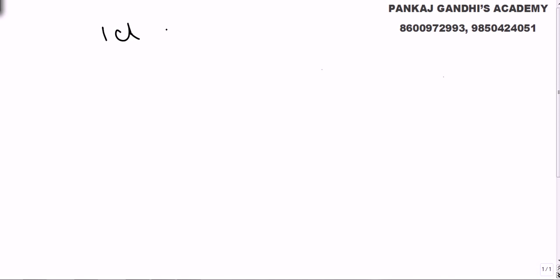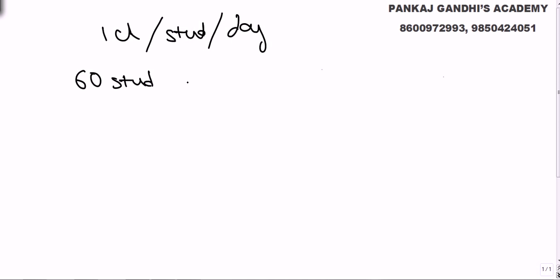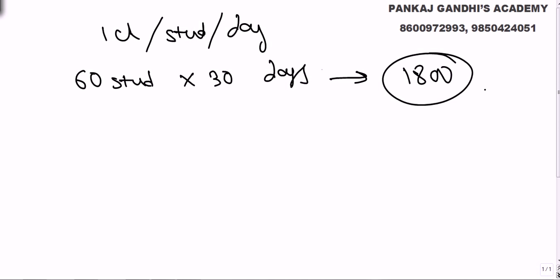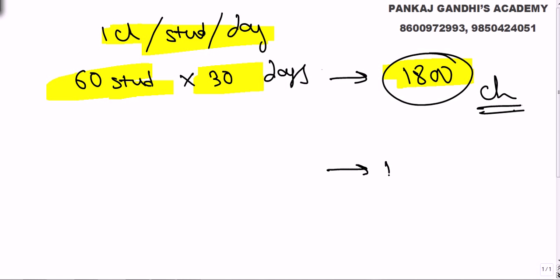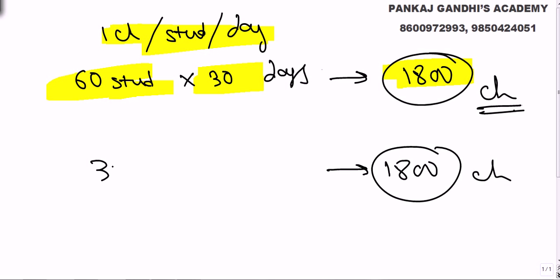Let's say in our class we decide to give one chocolate per student per day and there are 60 students. The class lasts for 30 days, so for 60 students, 60 chocolates per day into 30 days, we will need 1800 chocolates. If we have 30 students instead, it will last for 60 days.